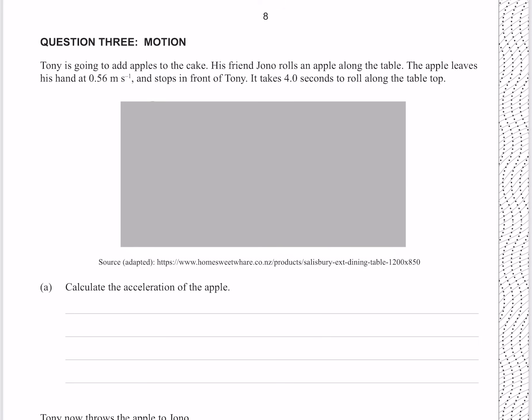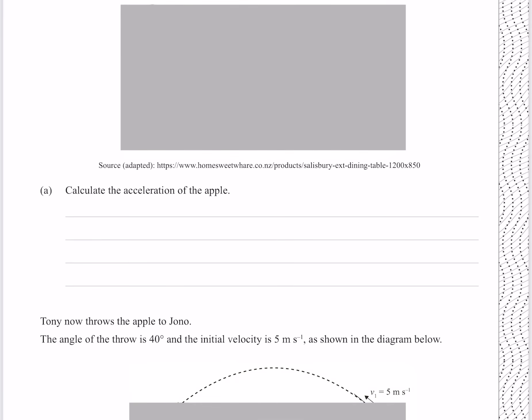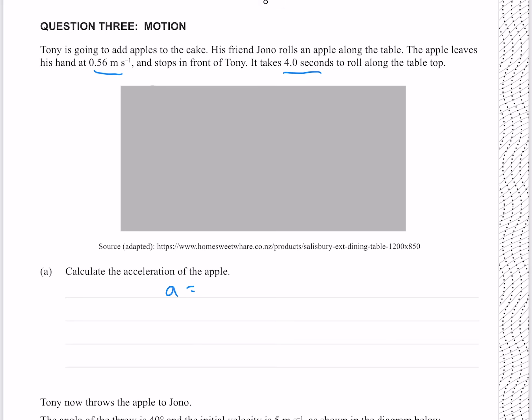Question 3. Tony is going to add apples to the cake. His friend Jono rolls an apple along the table. The apple leaves his hand at 0.56 meters per second, and stops in front of Tony. It takes 4 seconds to roll along the tabletop. Calculate the acceleration of the apple. Acceleration is our change in velocity over our change in time, where our change in velocity is 0.56, and our change in time is 4 seconds, which gives me 0.14 meters per second per second.